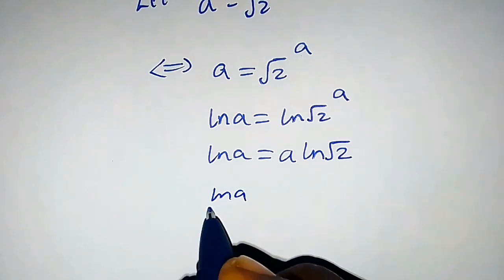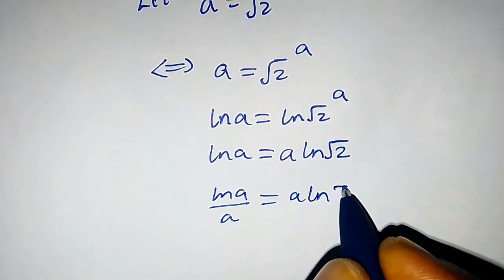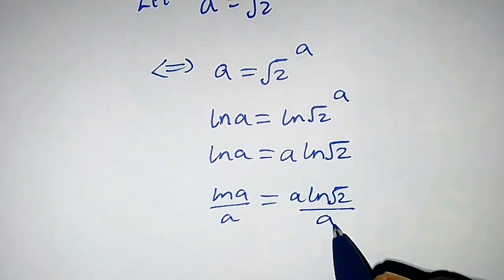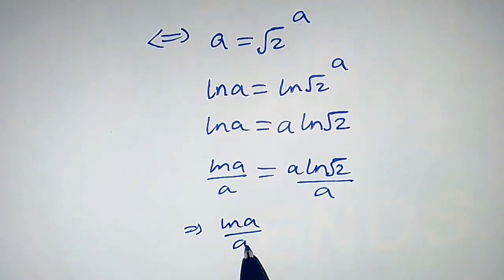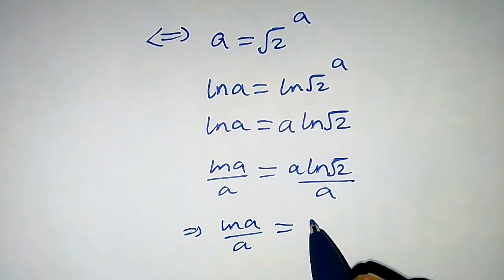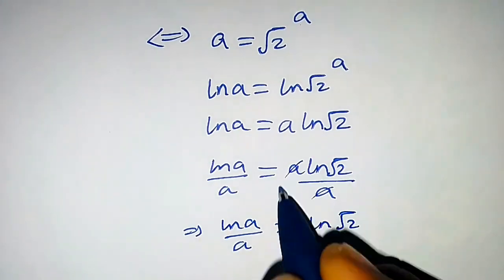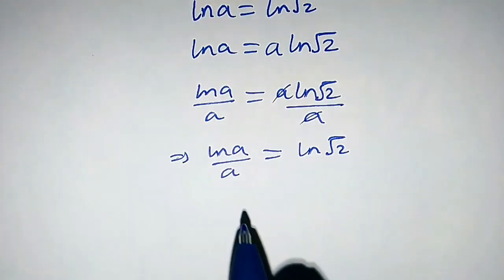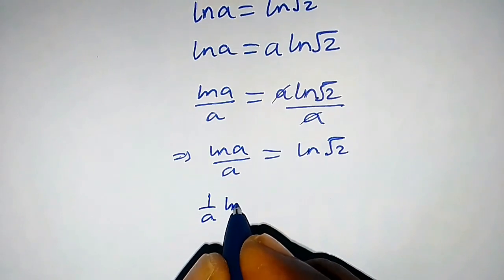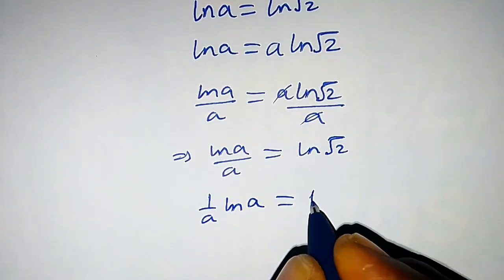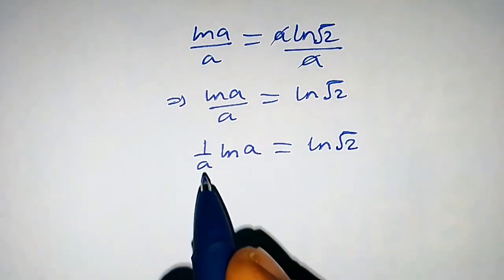Let's divide both sides by a. We get ln(a) over a equals a times ln(square root of 2) over a. This implies that ln(a) over a equals ln(square root of 2), because the a's cancel. The left-hand side is the same as writing (1/a) times ln(a) equals ln(square root of 2).